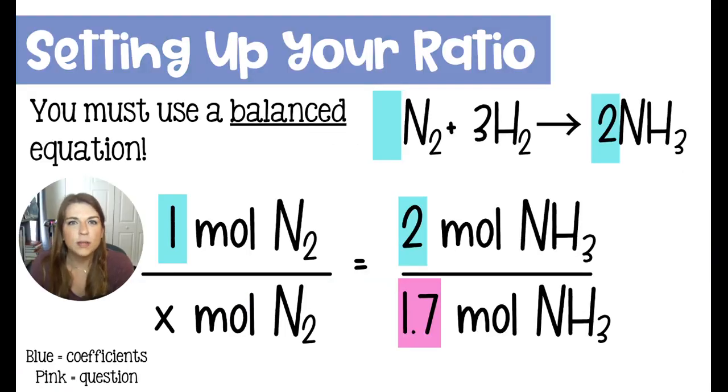So just like with converting grams to moles and using a ratio, we're going to use a ratio here as well. So let's say that we wanted to specifically find out the number of moles of nitrogen that we needed to get 1.7 moles of ammonia. We are going to take the coefficients from the balanced chemical equation. So every time we use one mole of nitrogen, we're going to get two moles of ammonia. So we're going to use that ratio of one to two to fill this out.